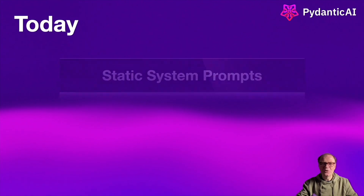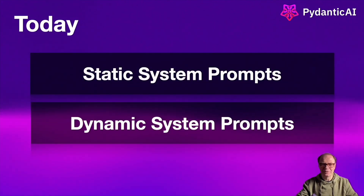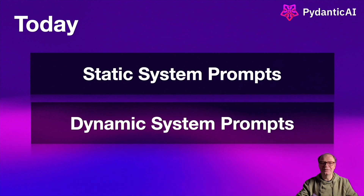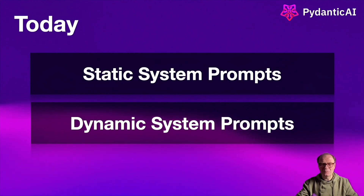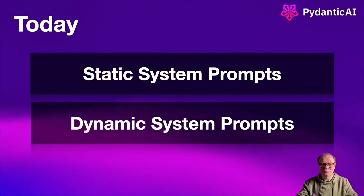In today's video, we're going to look into creating agents with custom system prompts. In previous videos, we've briefly touched on the topic, but today we'll dive into the details. In Pydantic AI, there are two types of system prompts. Static system prompts are known beforehand and can be defined via the system_prompt parameter of the agent constructor. Dynamic system prompts, on the other hand, depend in some way on the context that is not known until runtime and should be defined via functions decorated with the @agent.system_prompt. An agent can have both static and dynamic prompts, combined in the order they're defined at runtime.